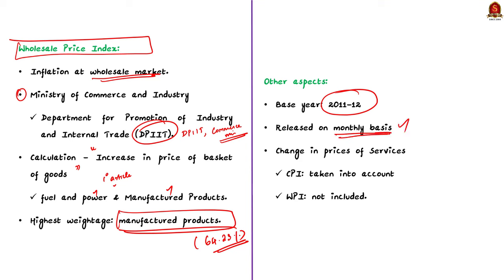One important point to note is that changes in the price of services like healthcare and banking transactions are taken into account while calculating the consumer price index, but they will not be included in the calculation of WPI. In this discussion, we saw about the basics of inflation and the two commonly used indices — CPI and WPI.